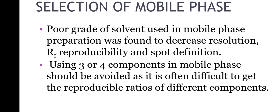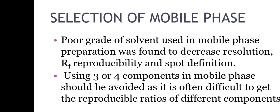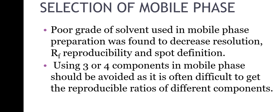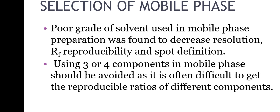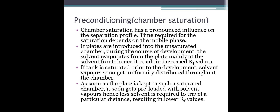For mobile phase selection, poor grade solvents were found to decrease resolution, RF reproducibility, and spot definition. Using 3–4 components in the mobile phase should be avoided as it is often difficult to get reproducible ratios of different components.